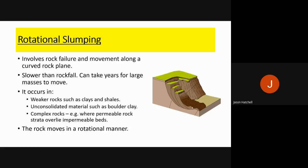Finally, rotational slumping involves the rotation or circular movement of land and soil downhill. The rock structure fails and moves down along a curved rock plane. It is slower than rockfall, can take years for large masses to move, and occurs in weaker rocks like clays, sands, and boulder clay, and where rock is very permeable. The rock moves in a rotational manner along the bottom of the rock bed.